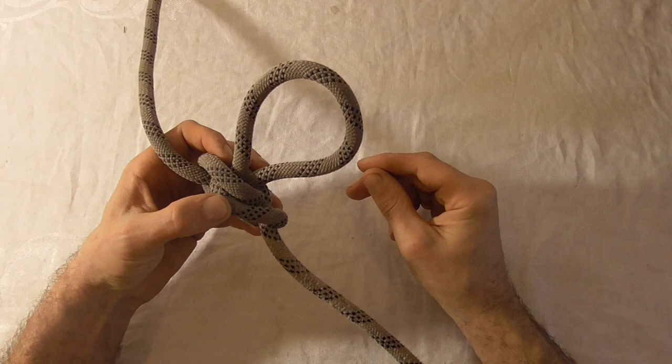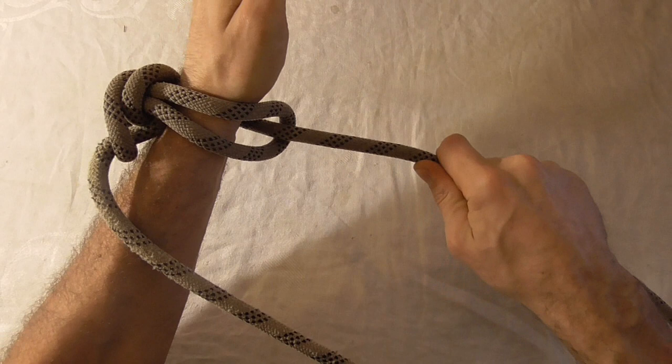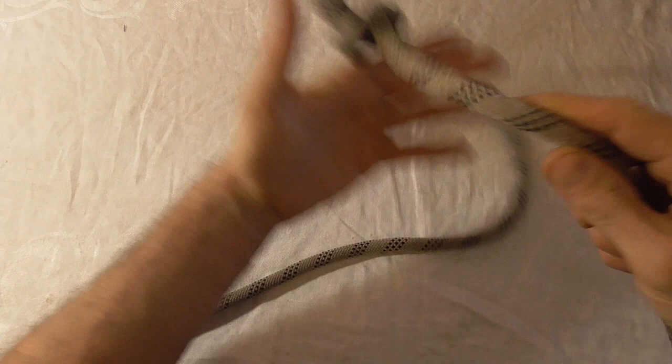The Alpine Butterfly Loop is a pretty versatile knot that's used in tree work. You can use it to build retrievable or part of retrievable canopy anchor systems where you can work off this side and then when you want to retrieve the system just pull it through.